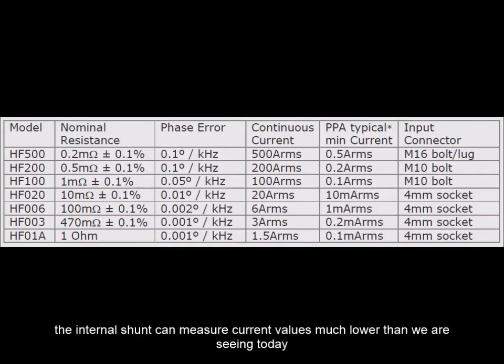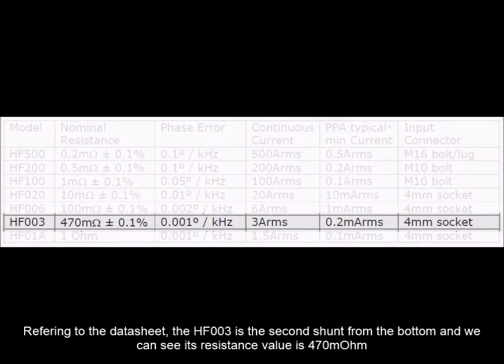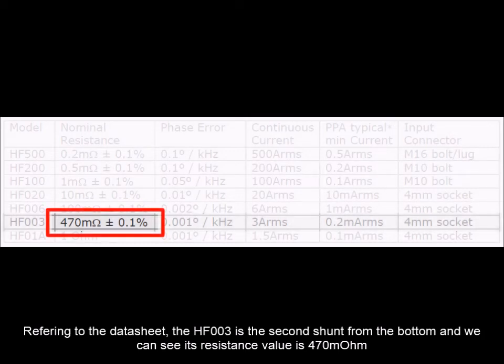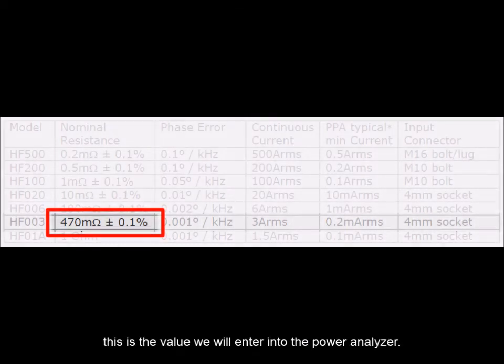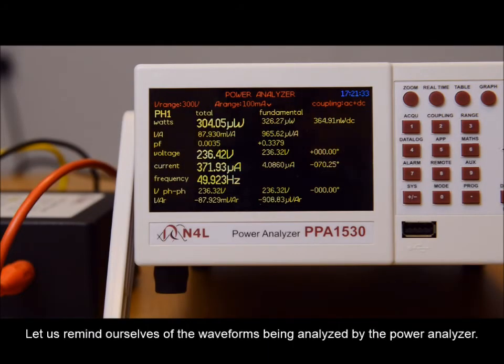Note that we are only using an external current shunt in order to demonstrate incorrect input configuration. The internal shunt can measure current values much lower than we are seeing today. Referring to the datasheet, the HF0003 is the second shunt from the bottom, and we can see its resistance value is 470 milliohms. This is the value we will enter into the power analyzer.